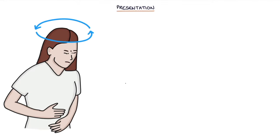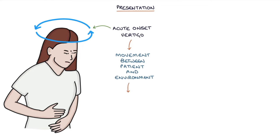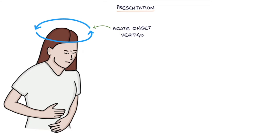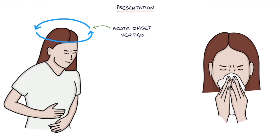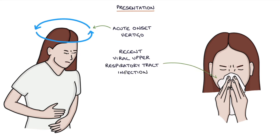Let's talk about the presentation. Typically the history involves the acute onset of vertigo. Vertigo is a descriptive term for a sensation that there's movement between the patient and their environment. Often this is a horizontal spinning sensation, similar to how you feel after spinning in a circle and then stopping abruptly. There may also be a history of a recent viral upper respiratory tract infection that may have triggered the inflammation of the vestibular nerve.